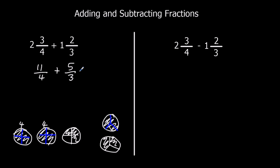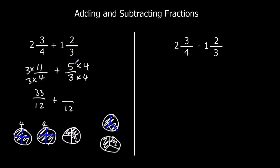And then we follow the same process as before — we want a common denominator, something the same on the bottom. So I'm going to times this one by 3 and times this one by 4. That's going to make both the bottom numbers 12, and that's what I want — a common denominator. So 3 times 11 is 33, and 5 times 4 is 20. So that gives me 33 twelfths plus 20 twelfths, which is 53.